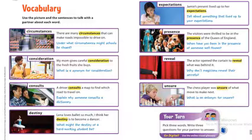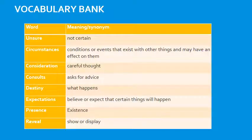First, let's make a quick revision of the vocabulary words. You can find this page in your book. Let's read the words in sentences: circumstances — there are many circumstances that can make roads impossible to drive on. Consideration — my mom gives careful consideration to the fresh fruits she buys. Consults — a driver consults a map to find which road to travel on. Destiny — Lena loves ballet so much, I think her destiny is to become a dancer. Expectations — James lived up to her expectations. Presence — the visitors were thrilled to be in the presence of the Queen of England. Reveal — the actor opened the curtain to reveal what was behind it. Unsure — the chess player was unsure of what move to make next.